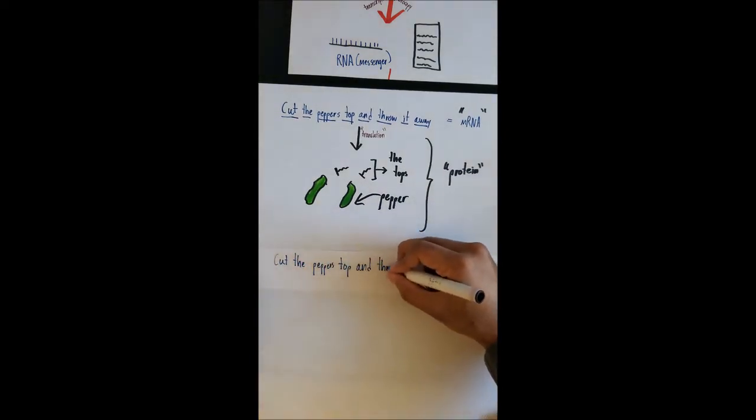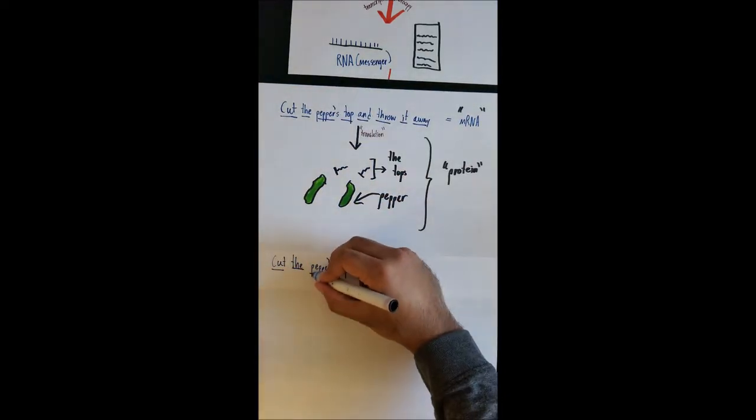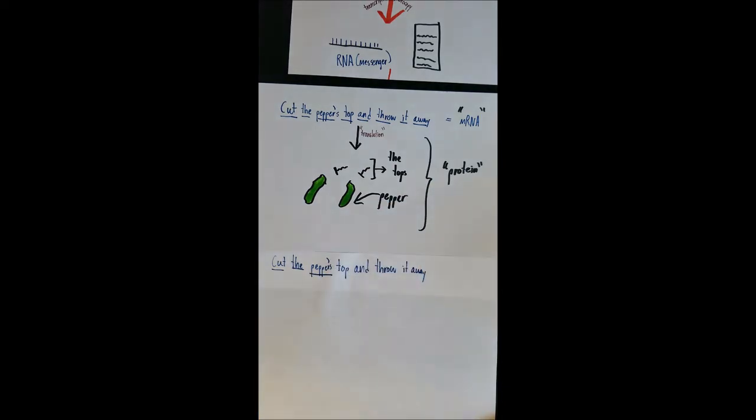Now, instead of reading it in the normal manner like above, I would read it like so: cut the pepper, frameshift, stop, and throw it away.